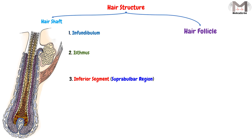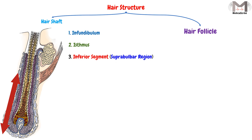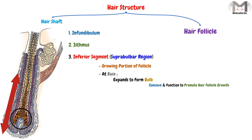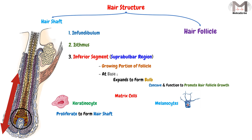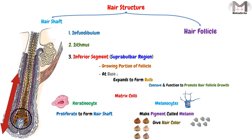The third region is the inferior segment or suprapulbar region of the follicle. This is the growing portion of the follicle that at its base expands to form the bulb, which is concave in shape and functions to promote growth. Here we find the matrix cells, composed mainly of two types: keratinocytes, which proliferate to form the hair shaft, and melanocytes, which produce melanin to give the hair its color.